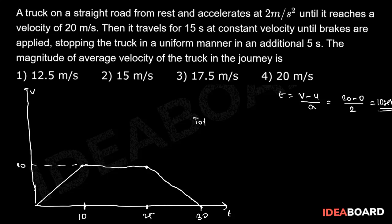Total displacement of the truck will be the area under the V-T curve. So that will be equal to half into sum of parallel sides, that is 30 plus 15, multiplied by the height which is equal to 20. So total displacement will be equal to 450 meters.